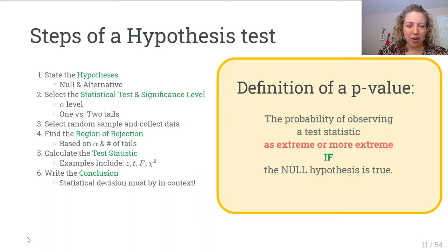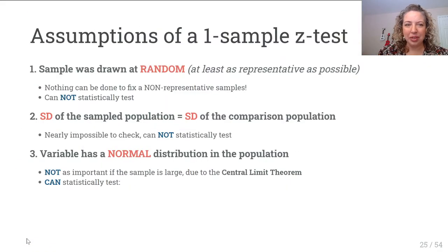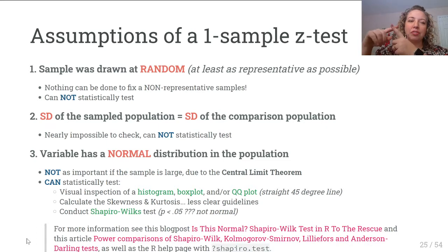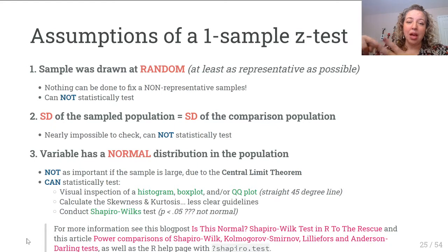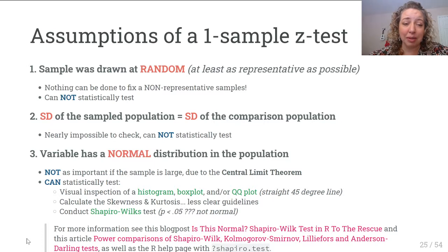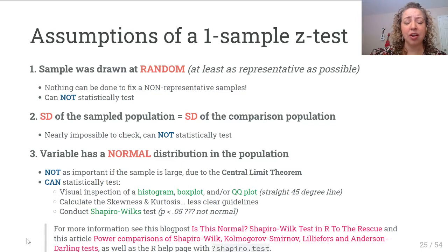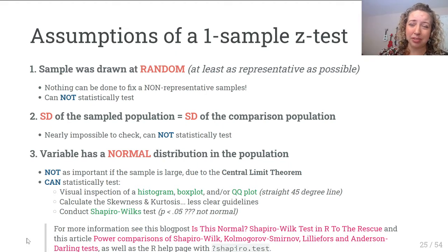I'm going to slip down to slide 25, which is where we left off before — the assumptions of the test. The first two assumptions are that we have a random sample so it's representative, and that the standard deviation of the sample population is equal to the comparison population. Those two assumptions are not testable directly. The third assumption of normality is something we can test, and with a large sample — over 30-ish — a one-sample z-test is pretty robust to violations of normality.